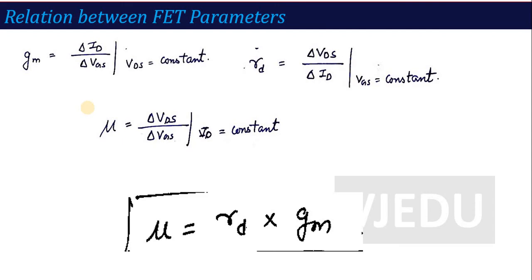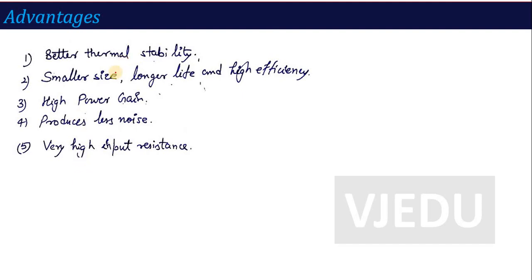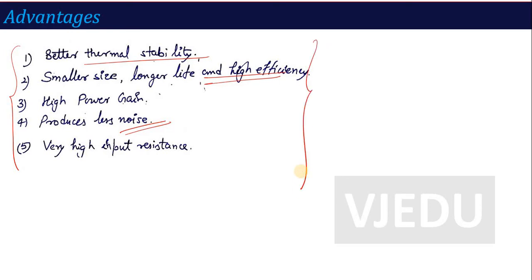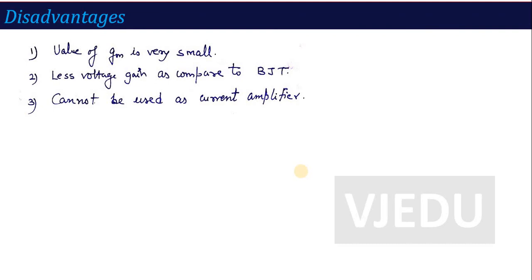The next important topic related to FET is its advantages and disadvantages. For advantages: FET provides good thermal stability, it is smaller in size, has longer life, higher efficiency, very high power gain, less noise produced, and very high input resistance. For disadvantages: the value of gm is very low; voltage gain compared to BJT is very low; and it cannot be used as a current amplifier because it is a voltage amplifier.